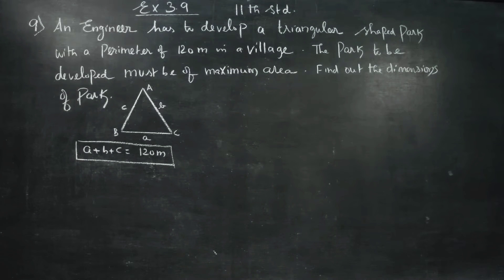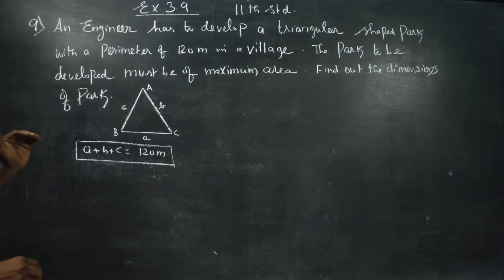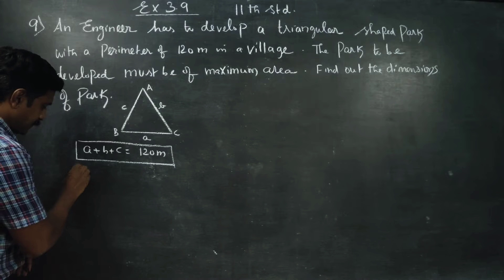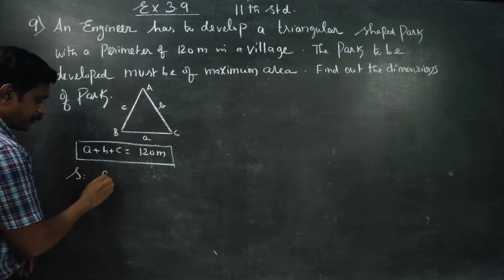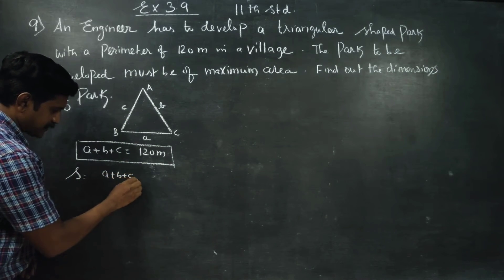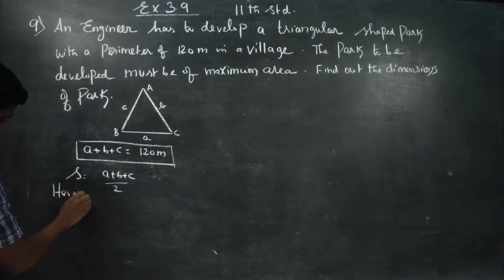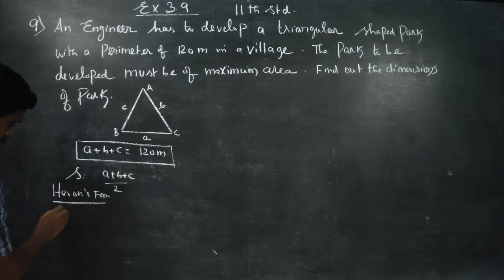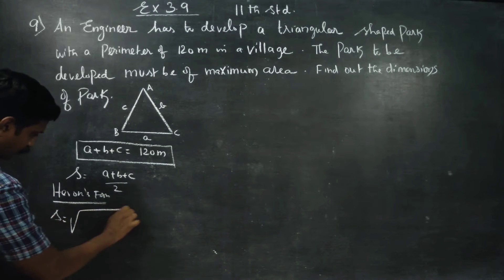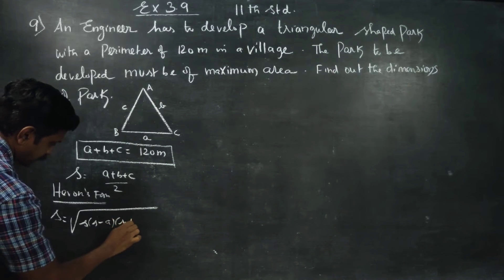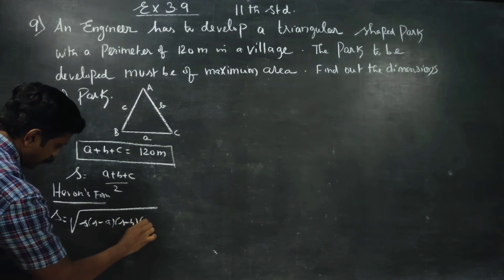How to deduce this problem? First, the semi-perimeter: we call it s, which is a plus b plus c by 2. Using Heron's formula to find the area of the triangle: delta is equal to square root of s into s minus a into s minus b into s minus c.